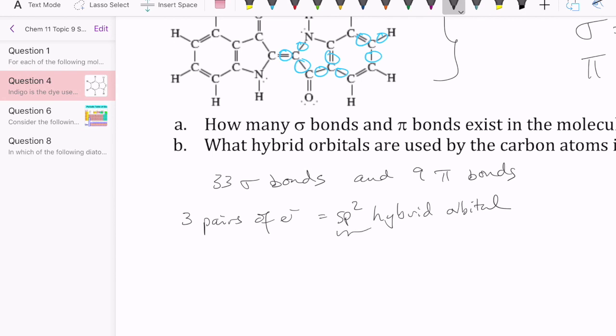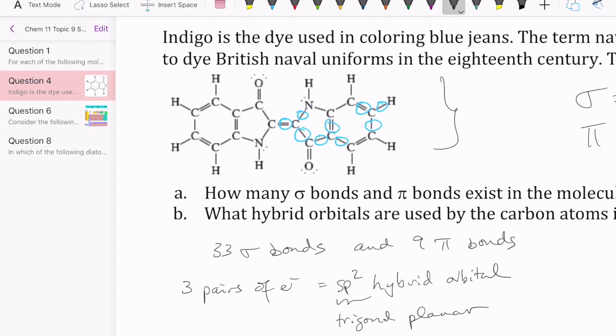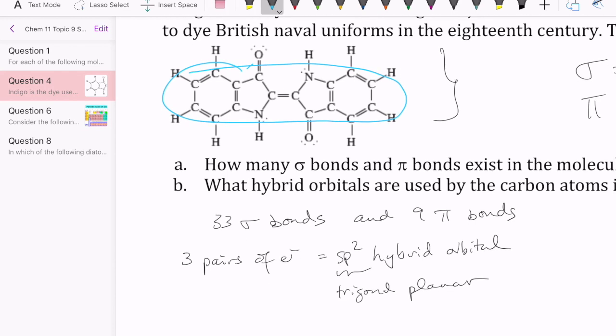Now, this is important because sp2, if you remember, means a trigonal planar structure. So what this is telling us is that this whole molecule right here, all of the carbons are actually flat. They're all on the plane of the paper. So this molecule, despite the fact that it's really big, it's actually a flat molecule, just exactly as drawn, which is rare because a lot of molecules are 3-dimensional. Sometimes they come out of the plane of the paper or go behind the plane of the paper, but this molecule is completely flat.